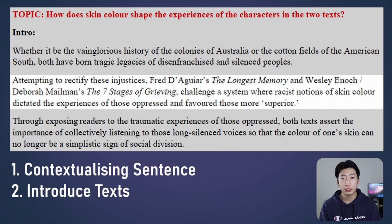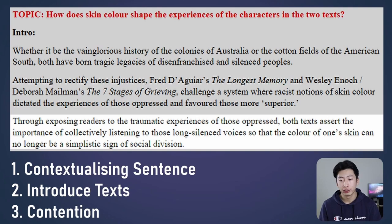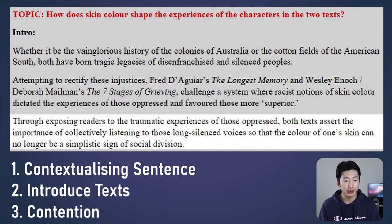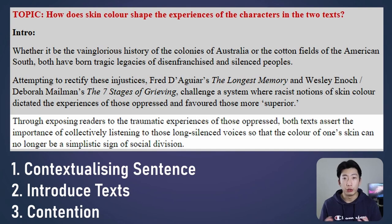The next sentence is our contention. Essentially what you want to do here is outline your overall stance as well as touch on the message of the text — basically, what are the two texts trying to achieve from the reader? In this case, I say: 'through exposing readers to the traumatic experiences of those oppressed, both texts assert the importance of collectively listening to those long silenced voices, so that the color of one's skin can no longer be a simplistic sign of social division.' Note the keyword 'experience' again. As a bonus tip, I quite like to use the sentence stem 'through...both texts assert,' which you might find helpful to articulate your contention.